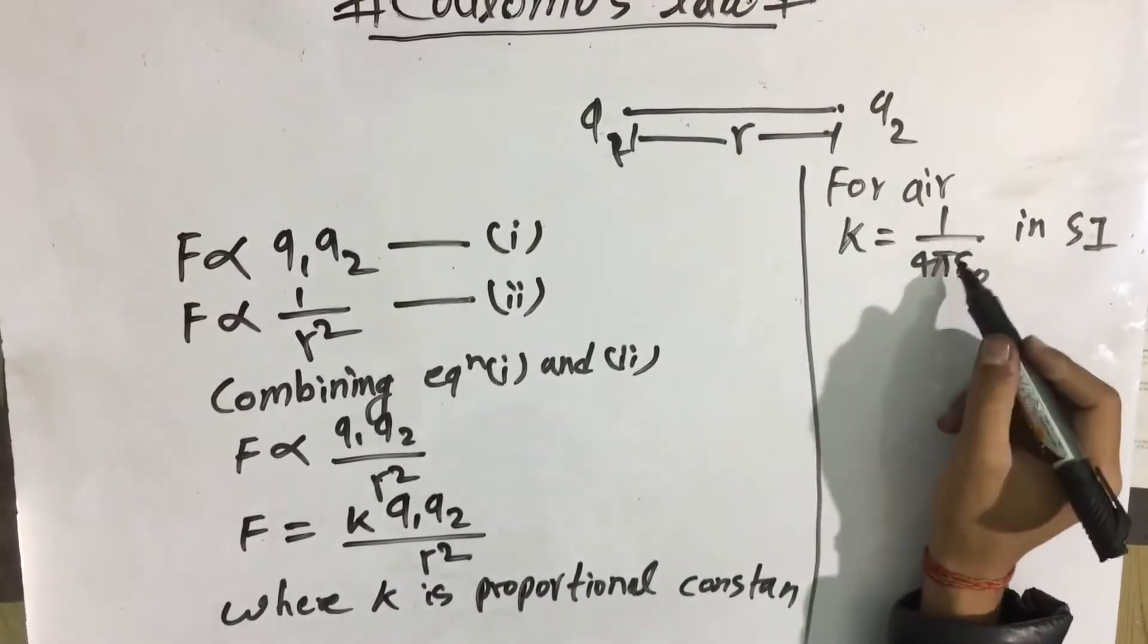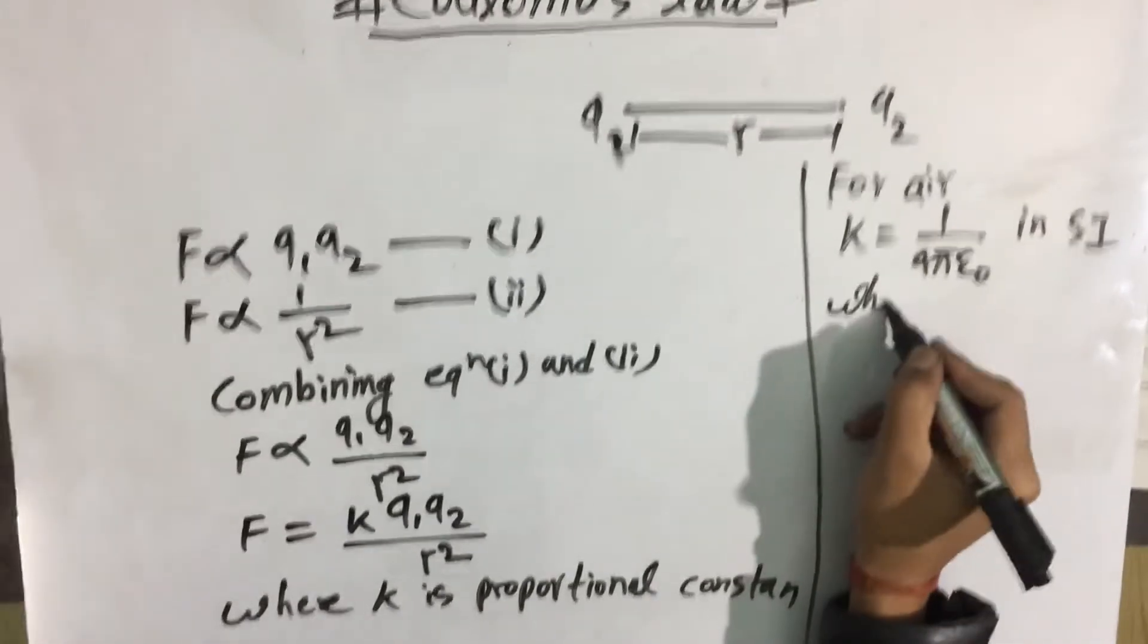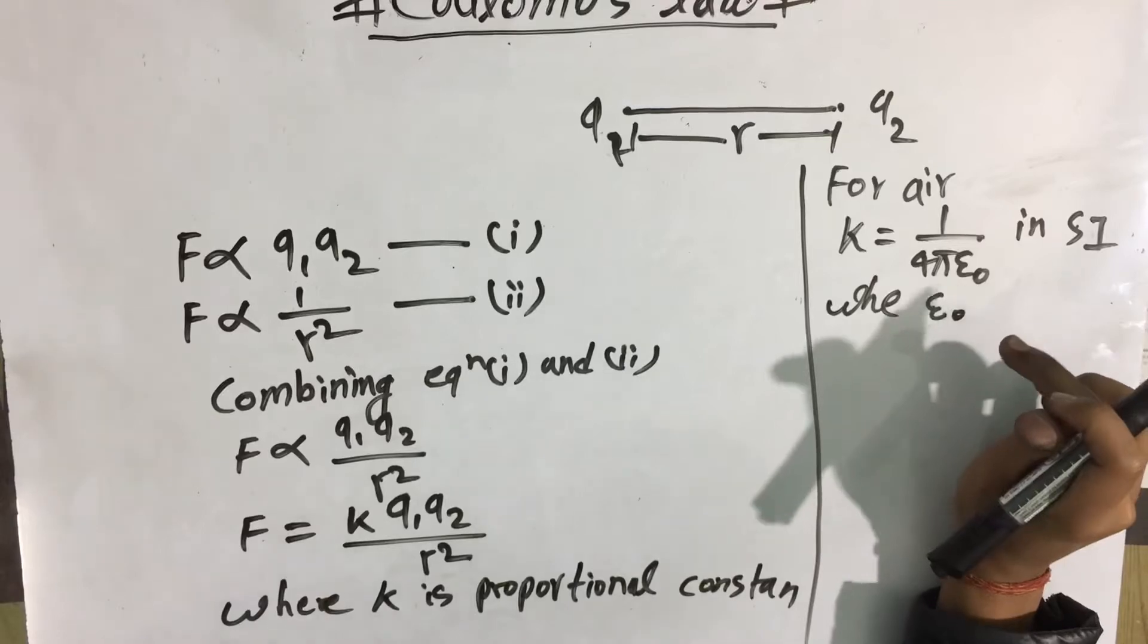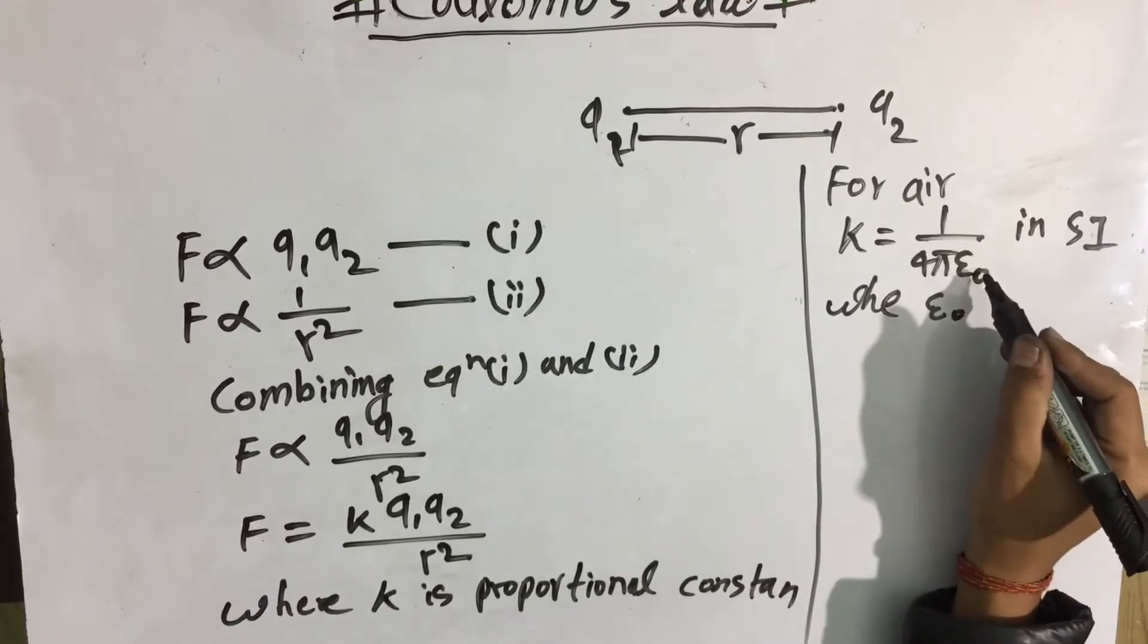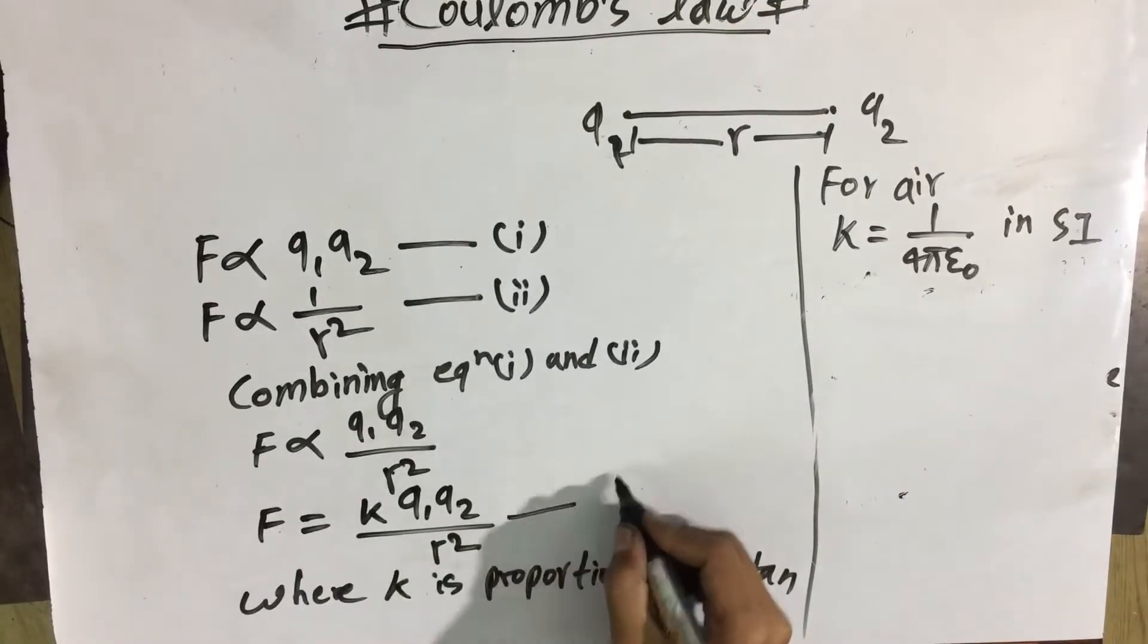The value is 1 by 4 pi epsilon naught in SI, where epsilon naught is the permittivity of air. This is equation 3.